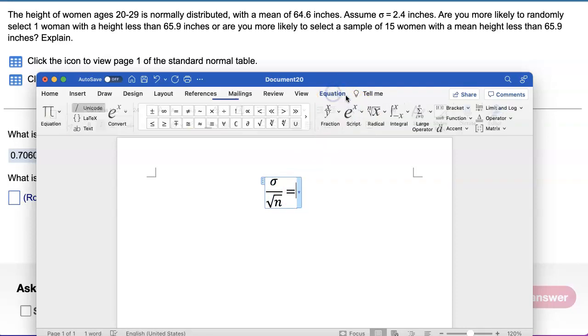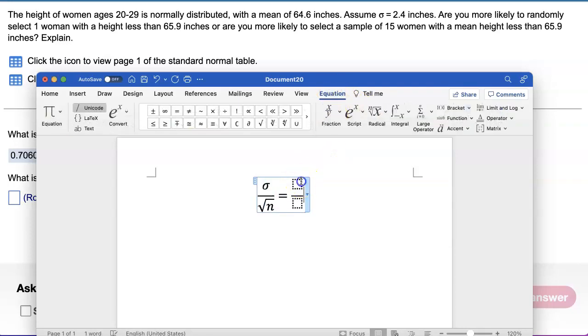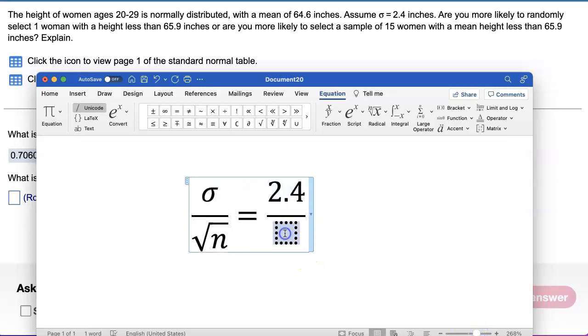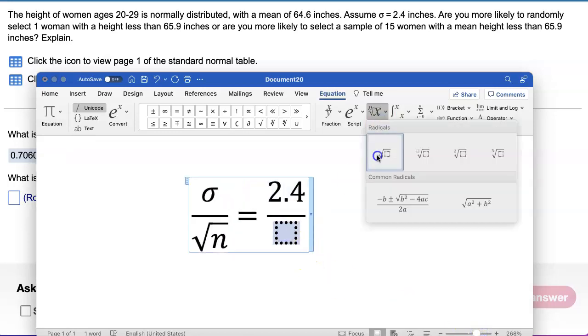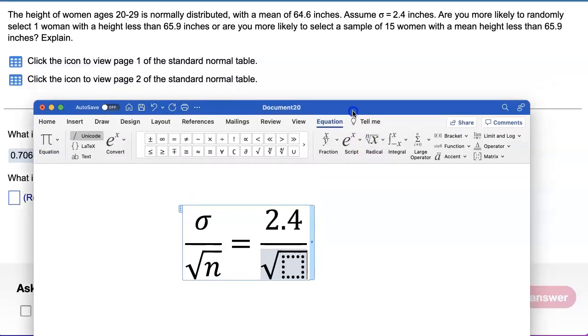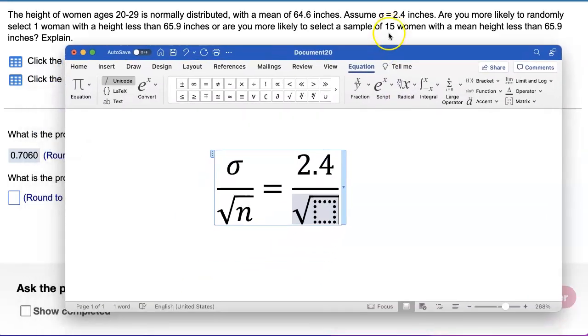On top of the fraction, we will enter 2.4. That's what they gave us as the population standard deviation. So that goes on top. In the bottom of the fraction, I have to do square root of the sample size. The sample size was 15. So you do square root of 15.